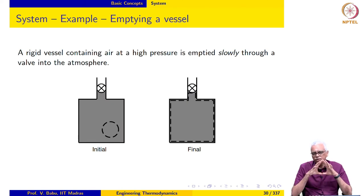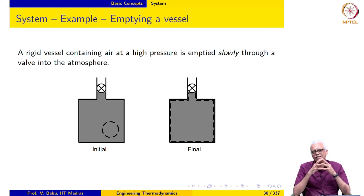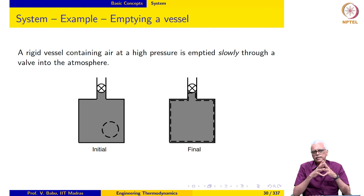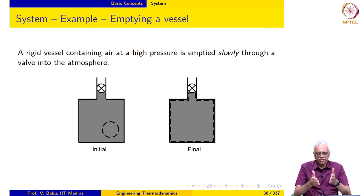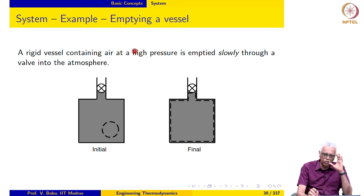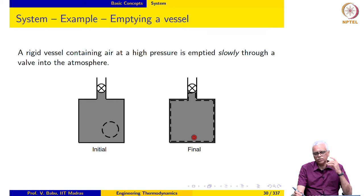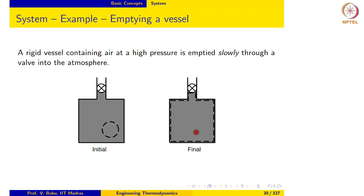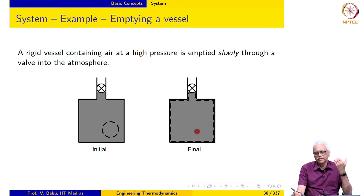Here also we need to think things through before defining the system. The guiding principle always is that the mass in the system should be the same throughout, and the system boundary must be known unambiguously from beginning to end so that the properties are known. We open the valve and allow a certain amount of air to go out. When we close the valve finally, a certain amount of air remains in the vessel. So we use that as the system — we define the system based on the final state.